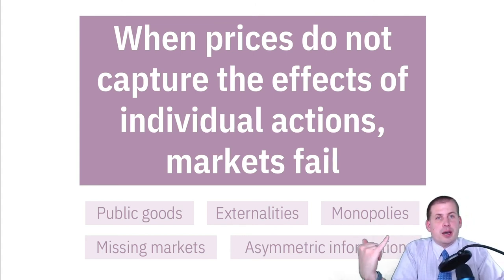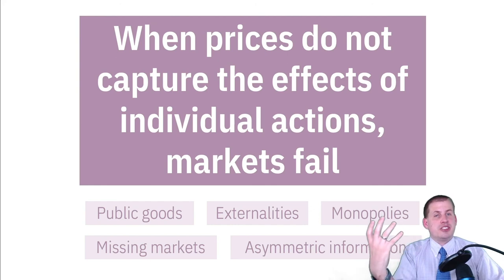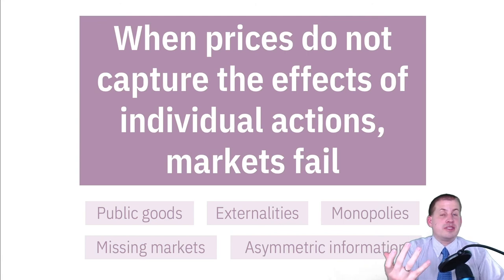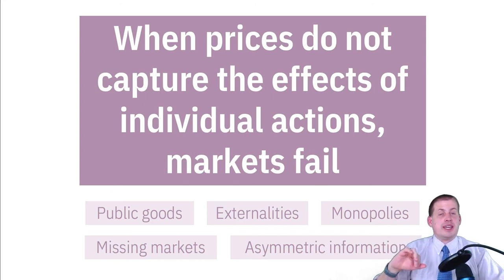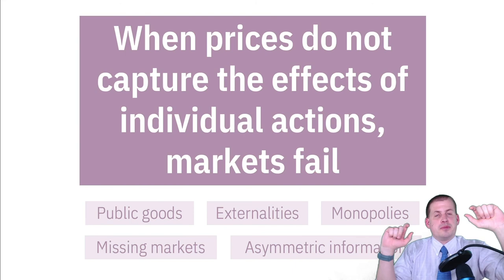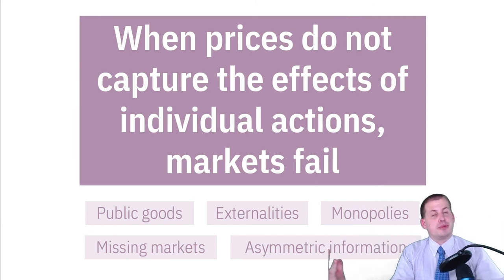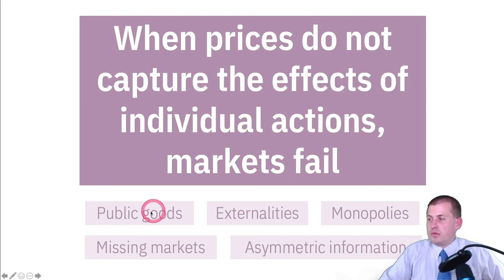We've also talked about asymmetric information: if you have moral hazard or adverse selection — hidden knowledge or hidden action — that can mess up the prices. For example, if you buy an insurance policy at a low price and don't tell them you're about to go skydiving the next day, the price for that policy no longer matches your personal actions. That's bad for the insurance company and great for you. When there's a mismatch between your actions and the prices, that creates a market failure.